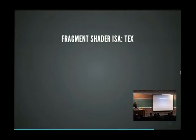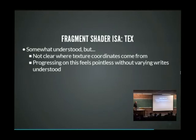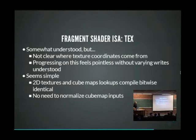The texturing instruction is somewhat understood - the encoding seems really simple. It's not entirely clear how it passes the texture coordinates, but that's more because I haven't felt like working on it without the varying reads working first - looking up the same texture coordinate for an entire triangle is extremely boring. It seems simple though; both 2D and cubemap lookups compile down to the exact same binary code, so the hardware handles all the details. No need to normalize cubemap inputs as some ISAs require.